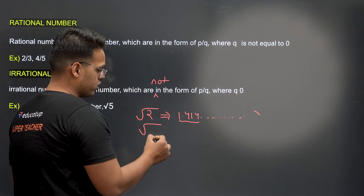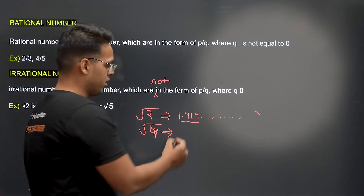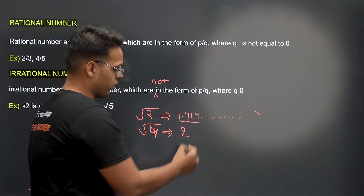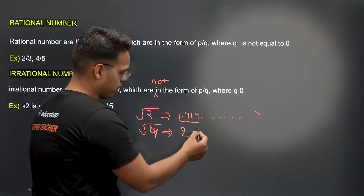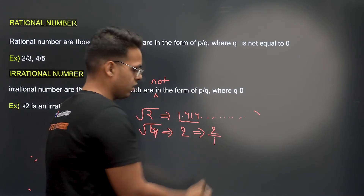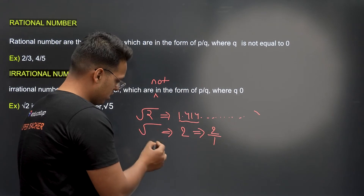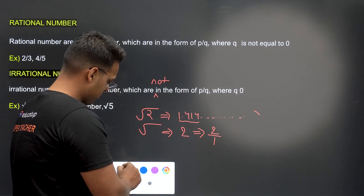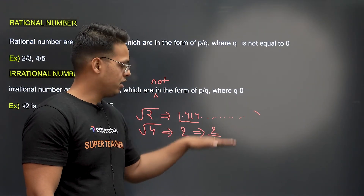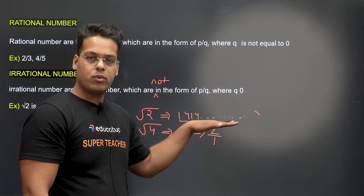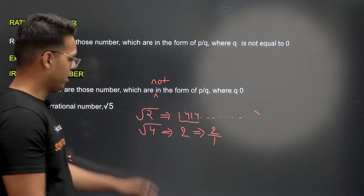Root 4 is not an irrational number. The value of root 4 is 2, and we can write 2 as 2 upon 1. So P is 2 and Q is 1, which means root 4 is a rational number.